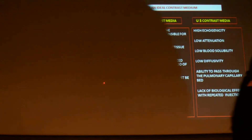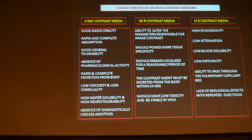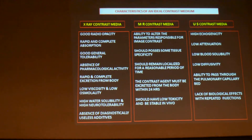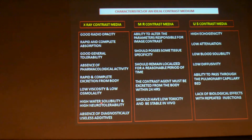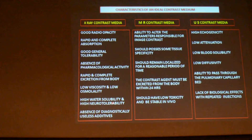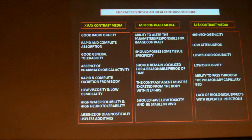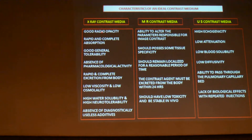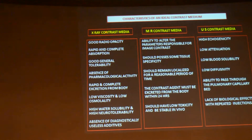It should have low viscosity and low osmolarity, and it should be highly water soluble so that it will be excreted fast. It should have more neuro-tolerability, meaning less side effects on the neurogenic system, and it should not have any useless additives within it. Those are the various features which an ideal CT, MR, or x-ray contrast media should have.